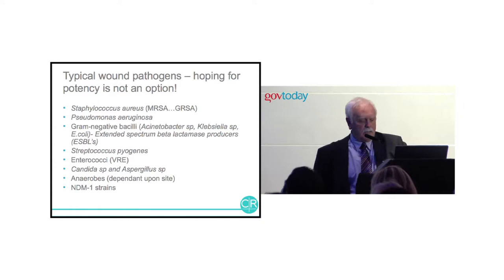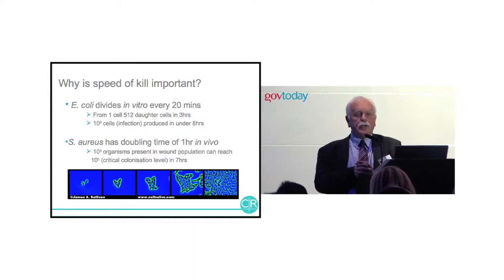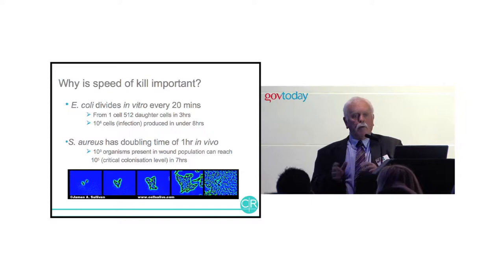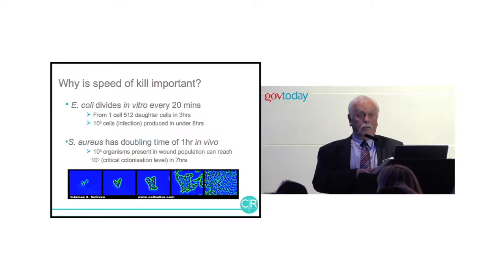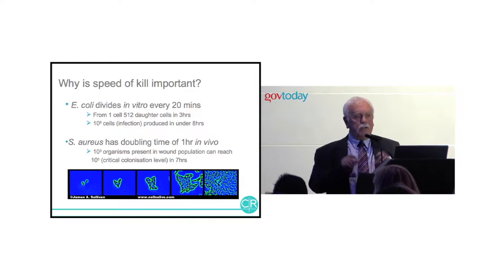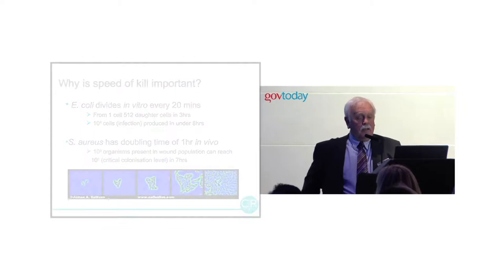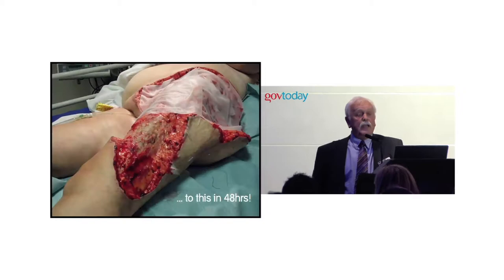Organisms like NDM-1 strains and MRSA will be dealt with by the next two speakers. As a medical microbiologist: why is speed of kill important? E. coli in the laboratory divides every 20 minutes — one cell to over a million in seven hours. In vivo, Staph aureus can go from one cell to 100,000 cells in under eight hours — a level that represents critical colonization. With necrotizing fasciitis you can go from initial presentation to severe tissue destruction in under 48 hours.